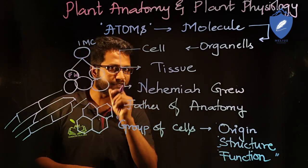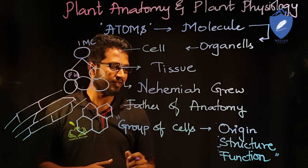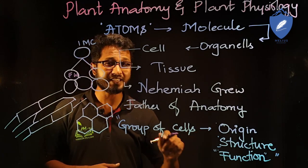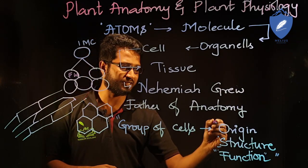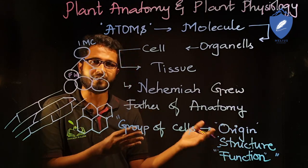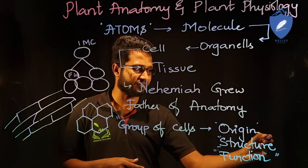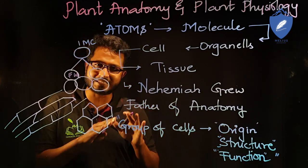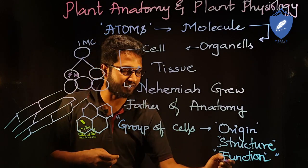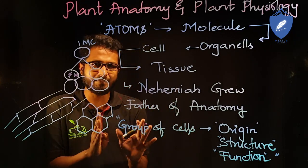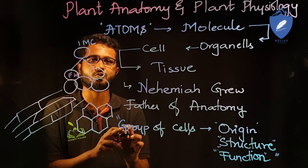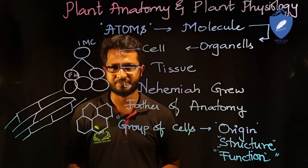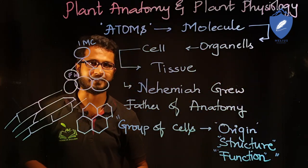One critical point to specify here: common function is quite well established, but origin can differ. Some cells can originate from different sources but later work together. Structurally they can also show differences. So structure and origin can either be similar or dissimilar, but function is always similar. However, for examination purposes, you will define tissue as a group of cells which have common origin, common structure, and common function. That is the overview of plant tissues.